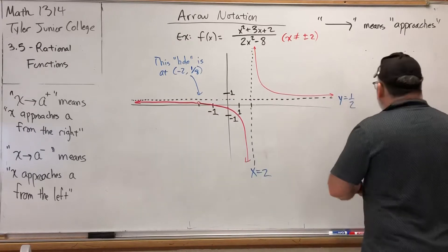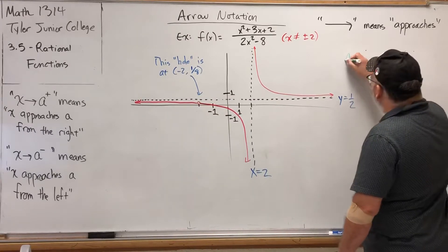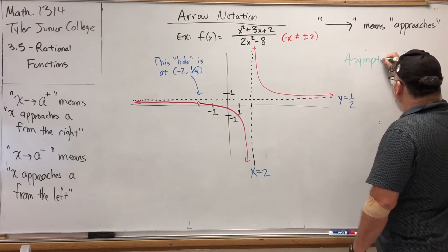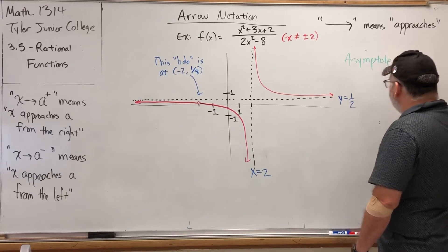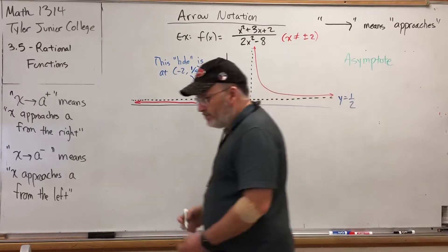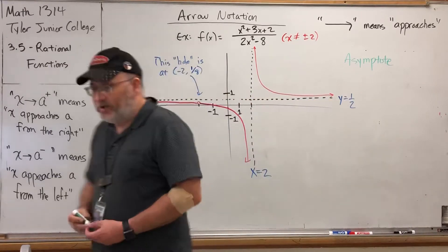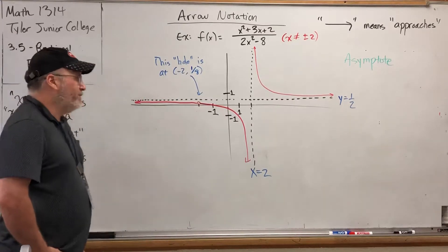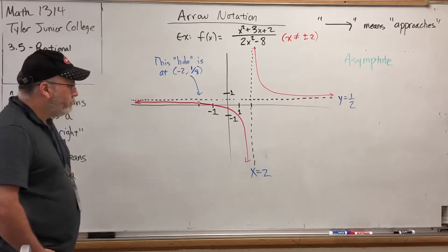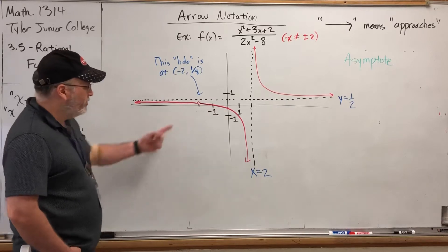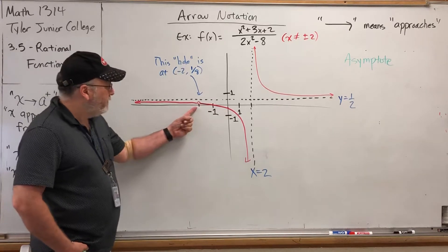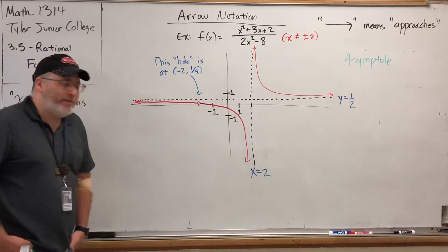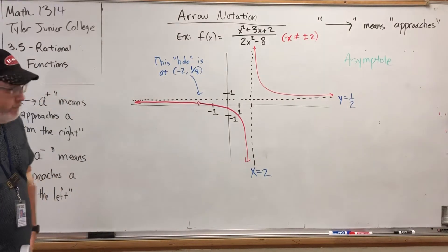These lines are called asymptotes — A-S-Y-M-P-T-O-T-E. The horizontal one is called a horizontal asymptote, and the vertical one is called a vertical asymptote. You may also notice that there is a hole in this graph. This hole is at negative 2 comma 1/8, and when the time is right, we'll explain where that came from.